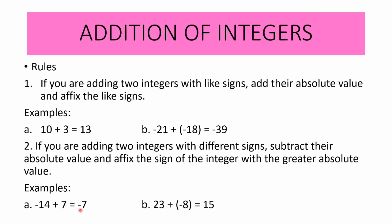For example letter B, we have 23 plus negative 8. Subtract their absolute values: 23 minus 8 is 15. The result is positive because 23 has the greater absolute value than negative 8. Therefore, 23 plus negative 8 is equal to 15.